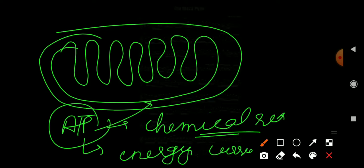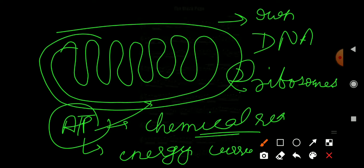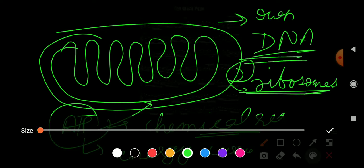An important point about mitochondria is that it has its own DNA and its own ribosomes.